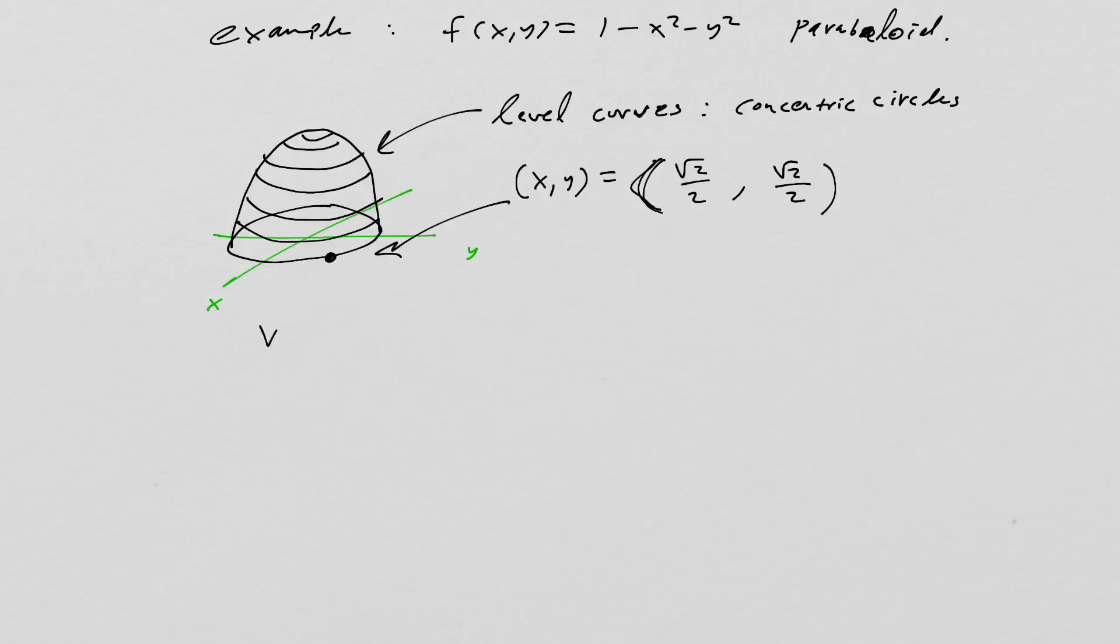So grad f is going to be negative 2x, negative 2y. So when I actually evaluate at our point, we're going to get negative root 2, negative root 2. So we can put that on our graph and it's going to be pointed straight into the origin like that. And of course that is the direction of greatest ascent.